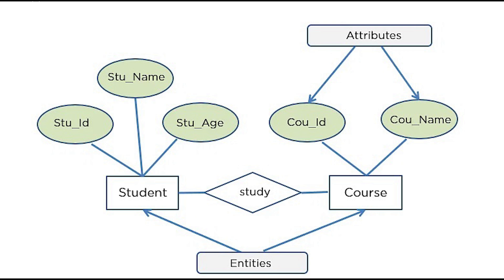If an entity doesn't have a key attribute type of its own, it is a weak entity type and it borrows one from a strong entity which has a key attribute type. Composite attribute types like address can be broken down into simple or atomic attribute types — for example, address can be broken down into zip code, country, street name, and apartment numbers. There are also multi-valued attributes; for example, a phone number attribute can have multiple values since one person can technically have more than one phone number. There is also a derived attribute like age, which can be pulled from another attribute like date of birth.